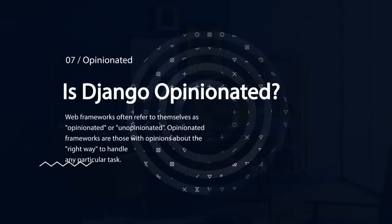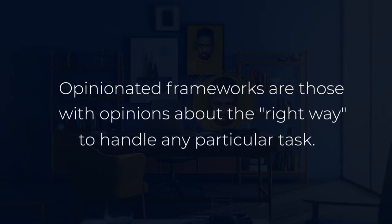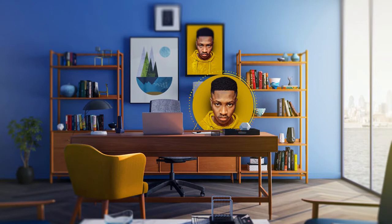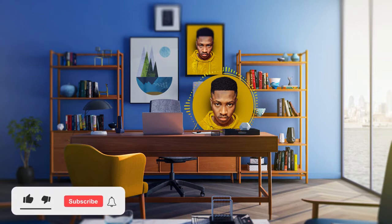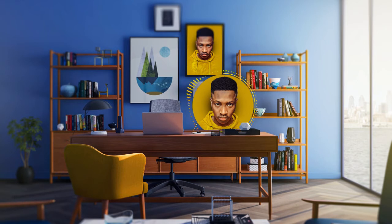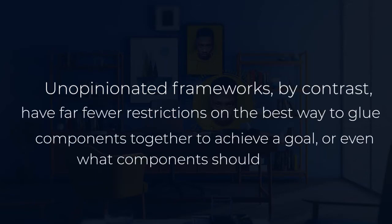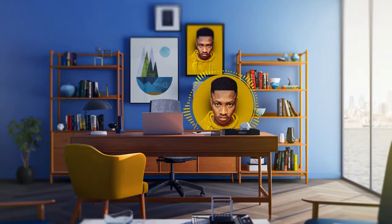Question seven: is Django opinionated? Web frameworks often refer to themselves as opinionated or unopinionated. Opinionated frameworks are those with opinions about the right way to handle any particular task — they often support rapid development in a particular domain because the right way to do things is usually well understood and documented. However, they can be less flexible outside their main domain. Unopinionated frameworks by contrast have far fewer restrictions and make it easier for developers to use the most suitable tools, but at the cost that you need to find those components yourself.